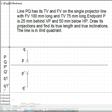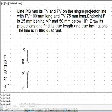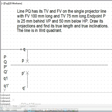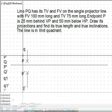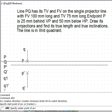Now in this case to get the true length and true inclination, what we need to do is we need to hinge it at the first point. First point is P and we will draw an arc, the center option.